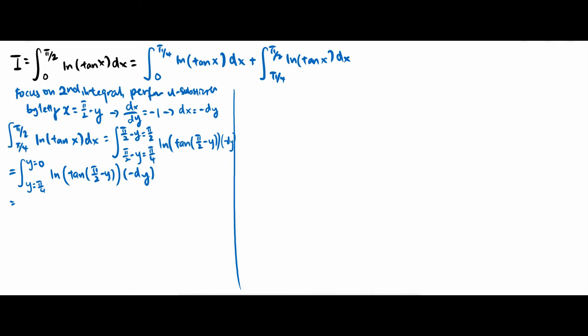As the upper limit is lower than the lower limit of the integral, we have to switch it around. So as we switch it around, we will get the negative sign in front of the integral from y equals 0 to y equals pi over 4, and this follows.